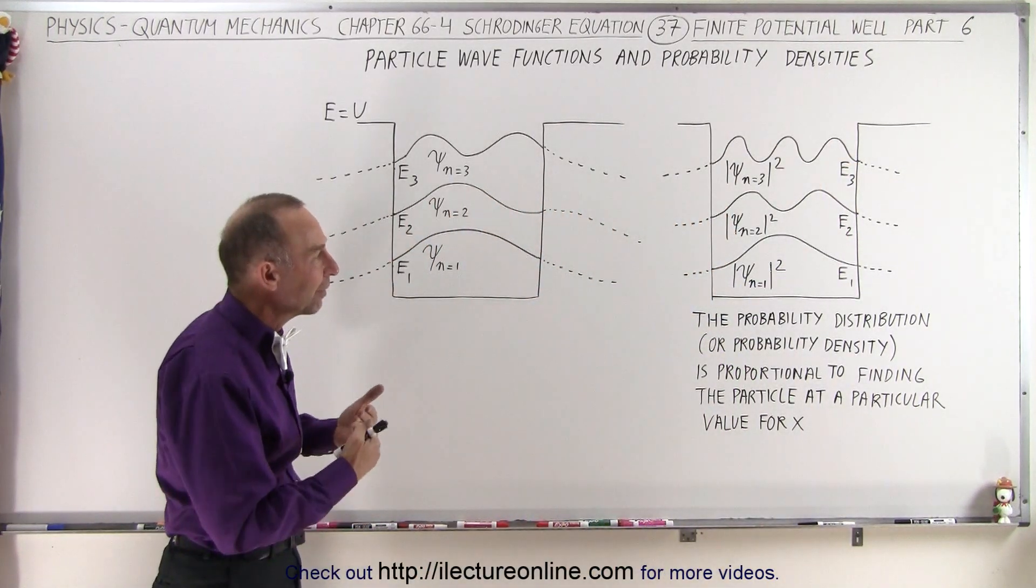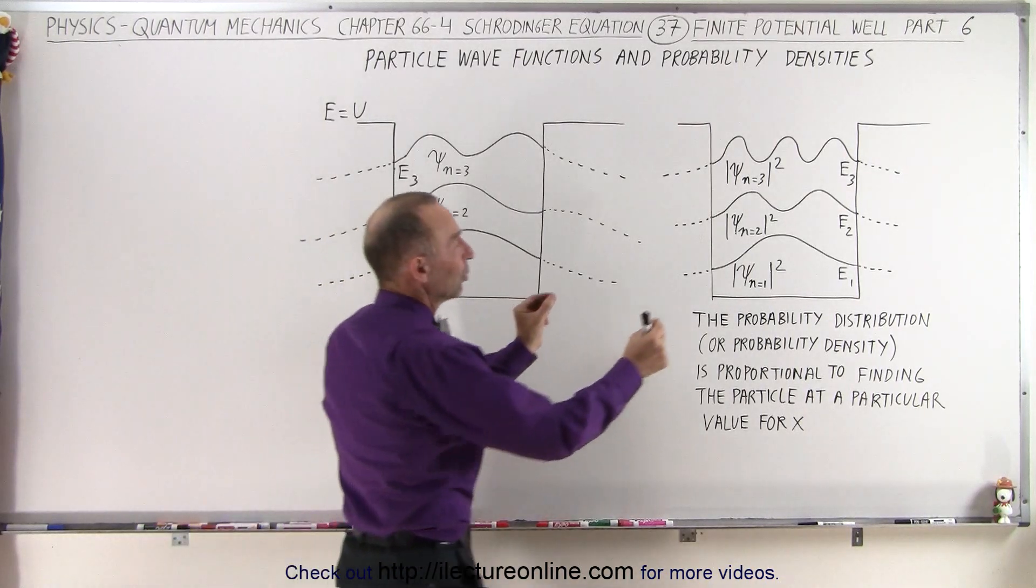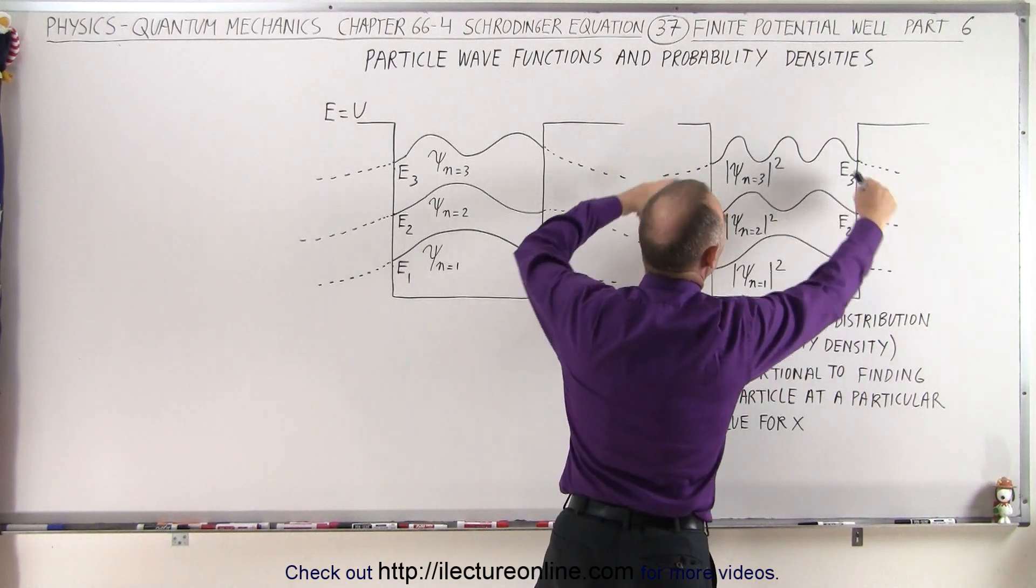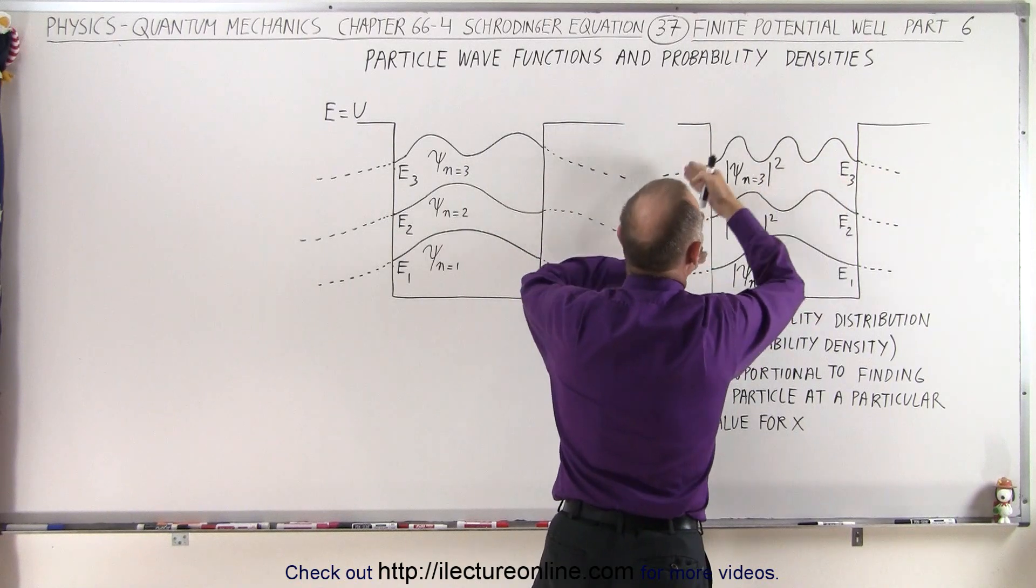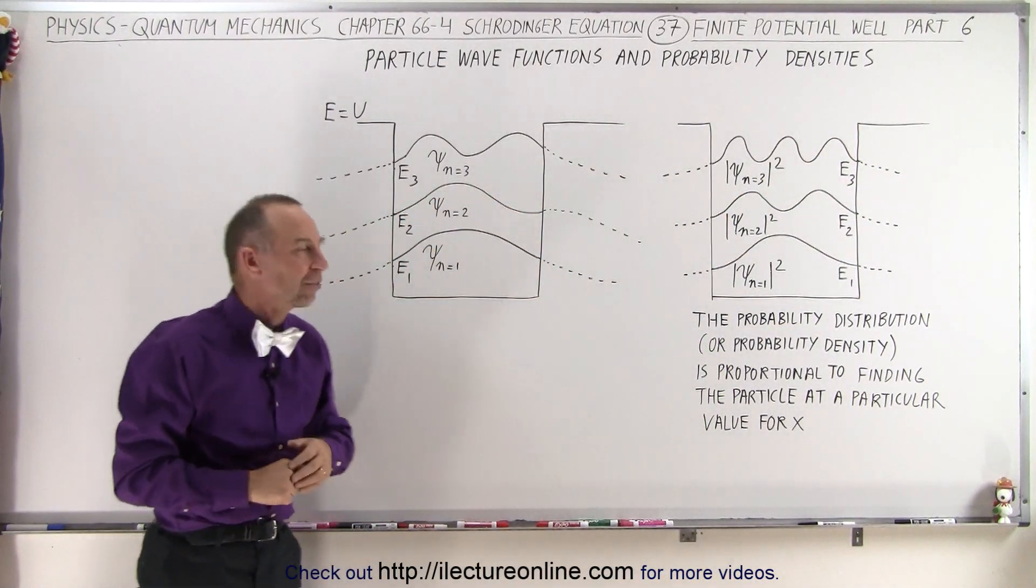So you can see that again, just like with an infinite well, we have similar patterns, except that here the waves will just go a little bit farther, and yes, there will be probability of finding the particle outside the region 2, in other words, inside the barriers as well, and we'll talk more about that in some later videos.